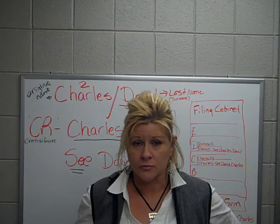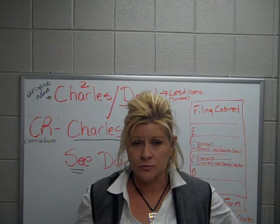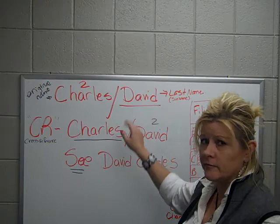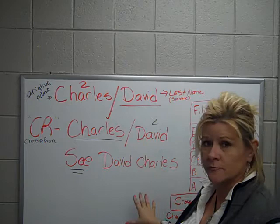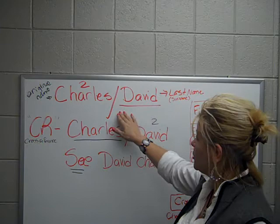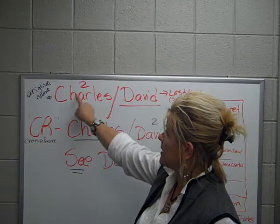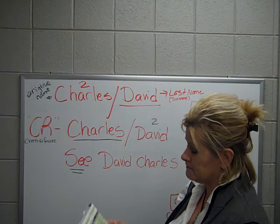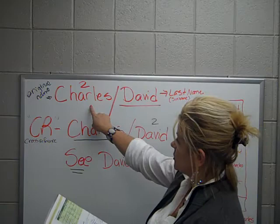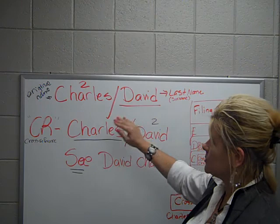Try not to make it harder than it is. If you are looking at a name like Charles David, this is first and last name. You take the last name and underline it — that's your key unit. Always the last name. Draw a diagonal between the two, and the next one is number two. If you have the middle initial, it would be three. On your self-checks, the key unit would be David; unit two would be Charles.